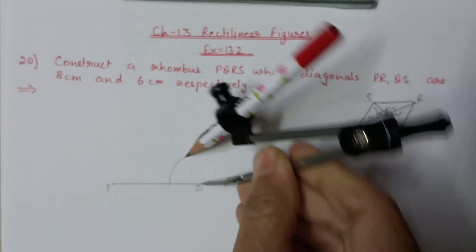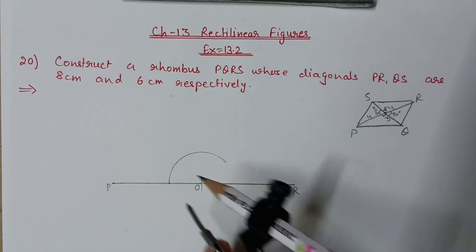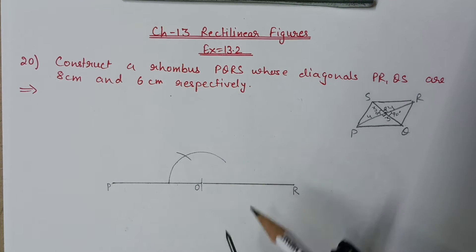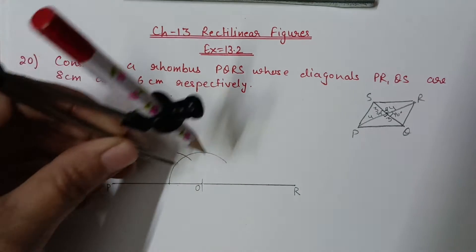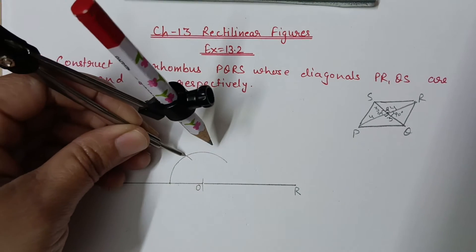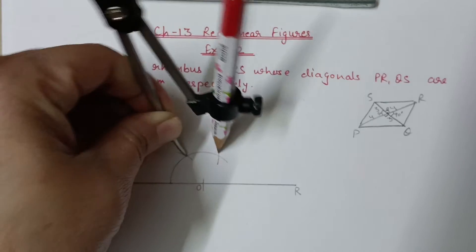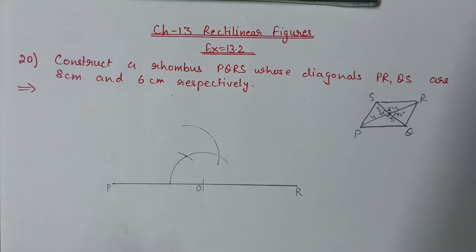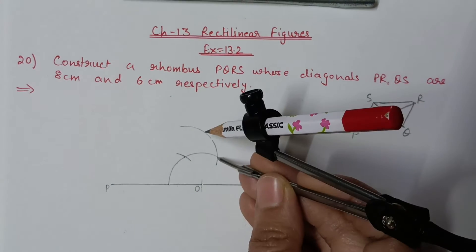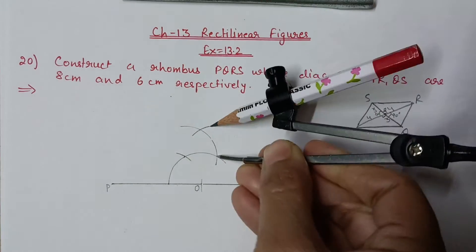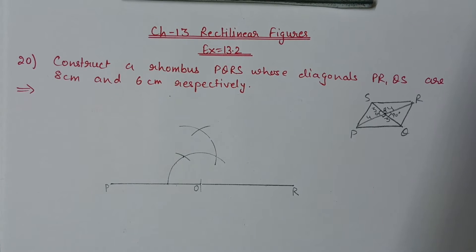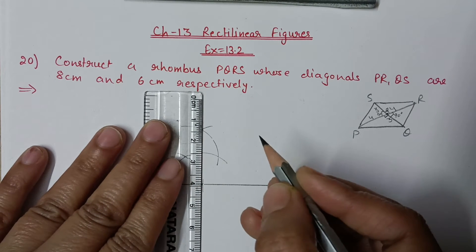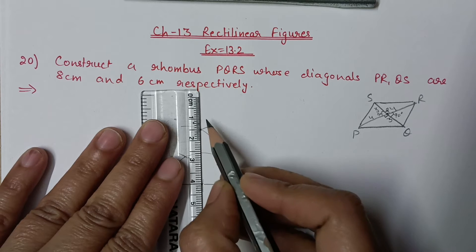At point O we have to construct a 90 degree angle. Keep the compass nib at O and construct a 90 degree angle: first draw a semicircle, first arc at 60 degrees, second arc at 120 degrees, then bisect between the 60 and 120 degree arcs to get 90 degrees.